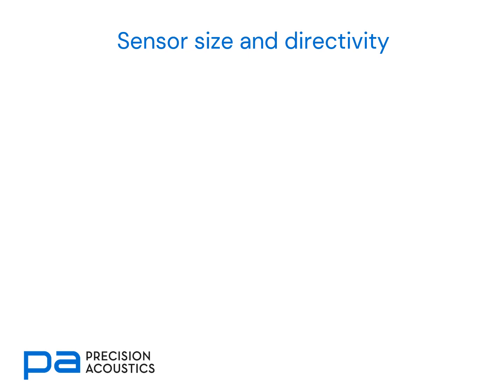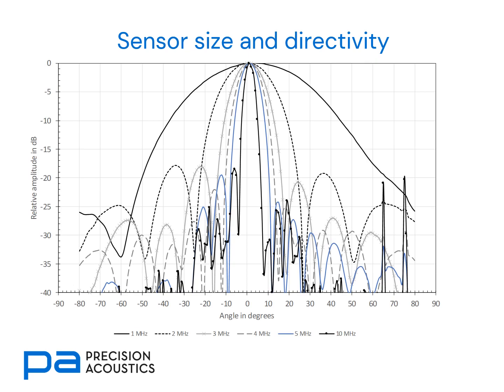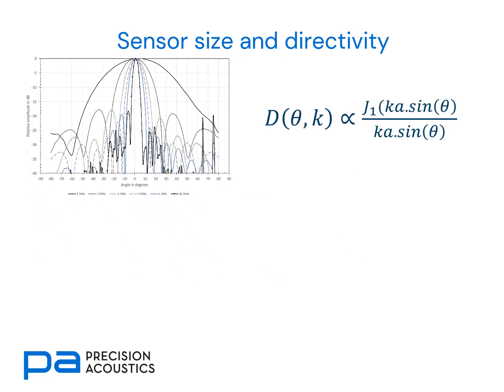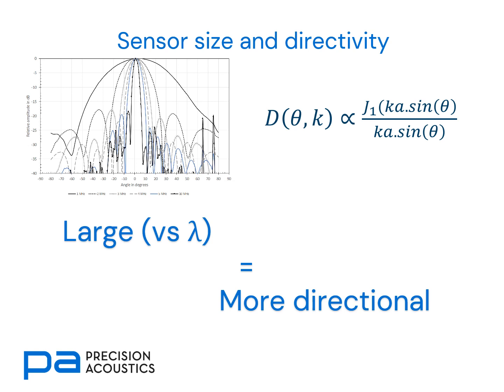Let's now look at directivity and how that's affected by sensor size. This is a typical directivity graph for a hydrophone at a range of different frequencies. As we go up in frequency, the directional pattern becomes ever more directional because the hydrophone is becoming large as a function of wavelength. Most directionality functions take the form shown in the equation here. We note that k is wave number and thus the reciprocal of wavelength, and a is the radius of the hydrophone. When we have a large ka number — something large versus wavelength — we get a more directional response.